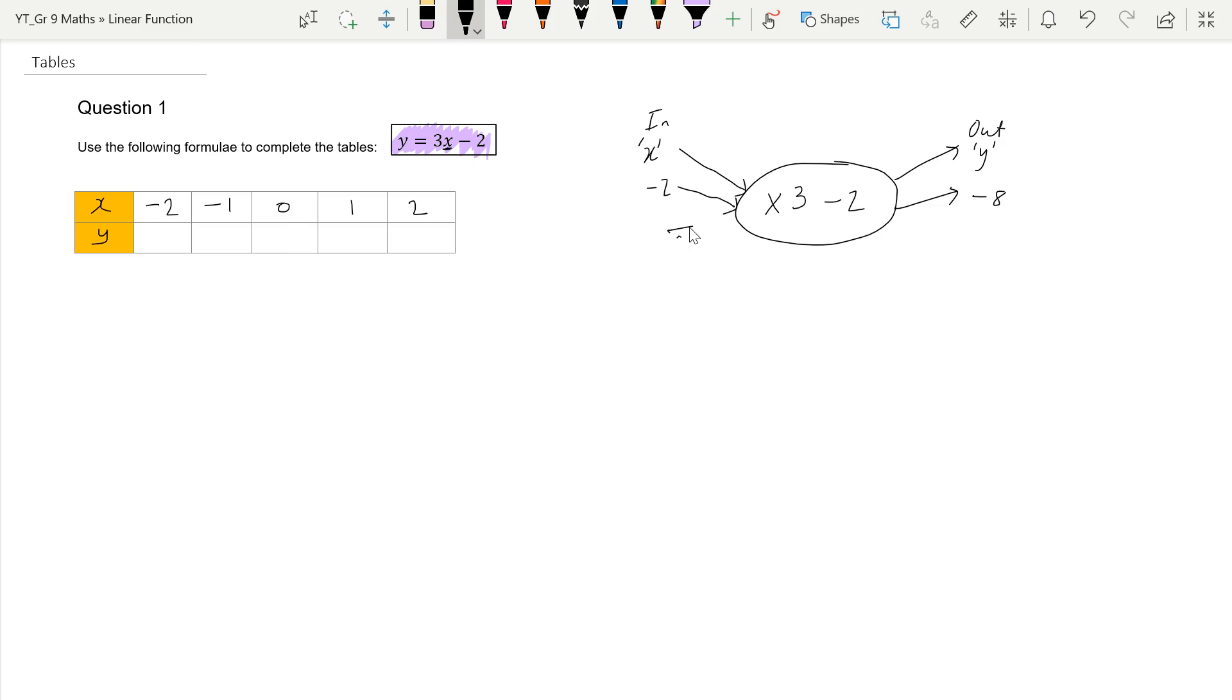Let's put in the 0 in there. 0 times 3 is just 0, and if I take 2 away, that will give me negative 2. And then if we put in a positive 2, I times that by 3, that gives me 6. And if I take 2 away, that will give me 4. And there is our spider diagram.